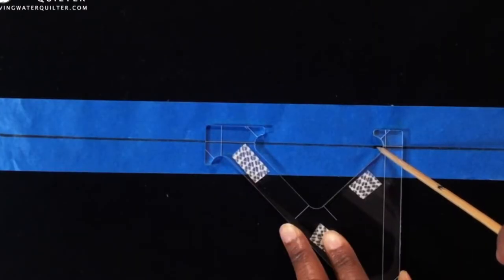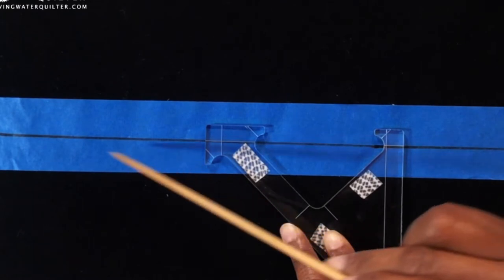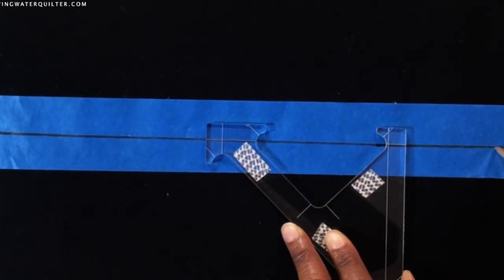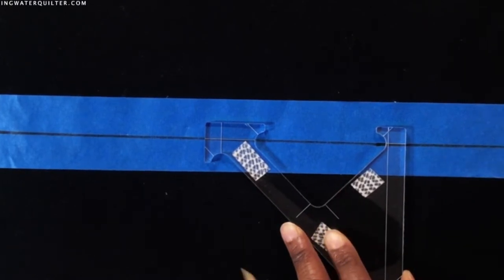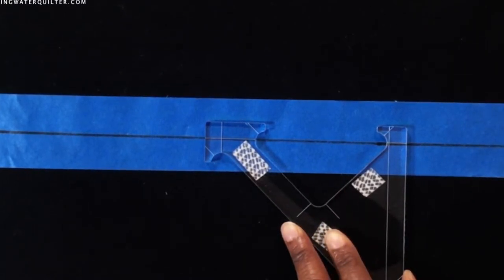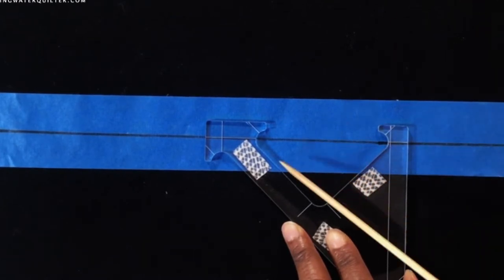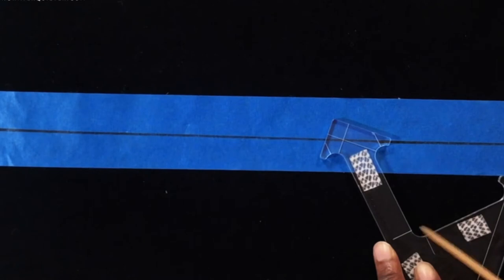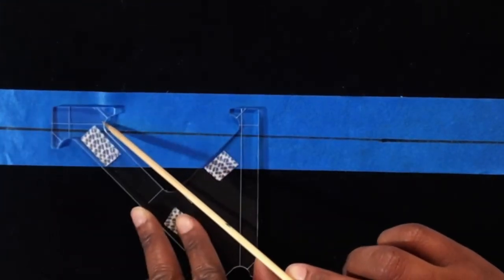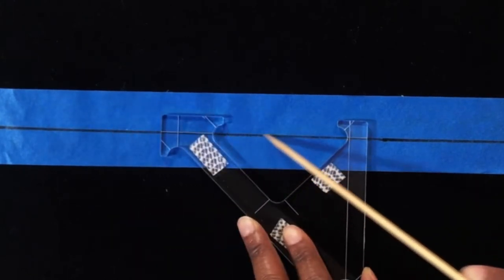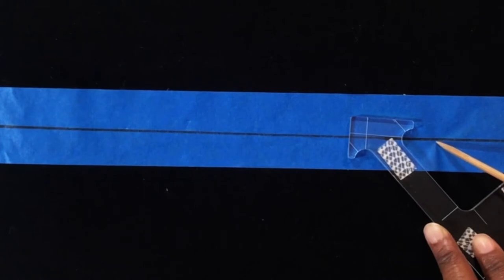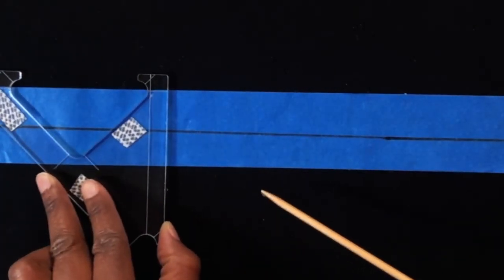By marking a reference line on our quilt sandwich with a water-soluble marker, we will prevent the stitching from going off in a weird direction. We want those zigzags to line up in a straight line, and we need something to use for that.